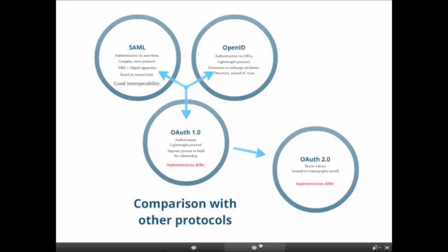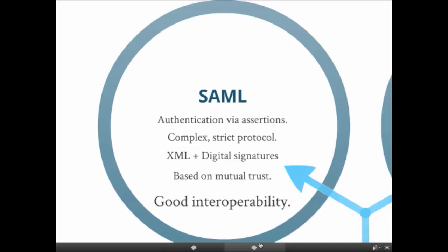OAuth addresses the specific problem of authorization. Comparing it to other protocols: SAML, also at version 2.0, uses an XML vocabulary to assert to another party that the user is who they claim to be. It can pass a user ID or other claims — for instance, a service provider can ask 'is this person older than 18?' and SAML can answer that. This limits the scope of what you share with the other party.